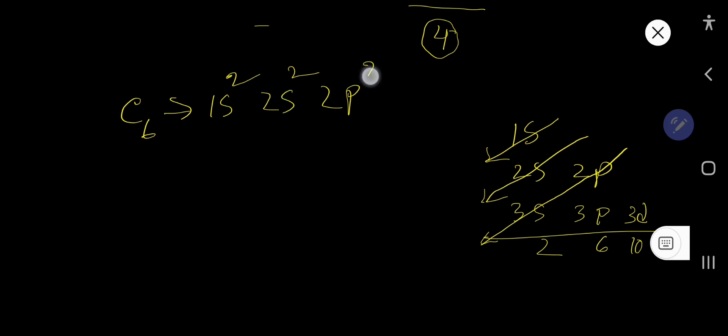2p gets 2 electrons, so 2p². This is the electron configuration of carbon: 1s² 2s² 2p². From this electron configuration, we will find out the valence electrons for carbon.